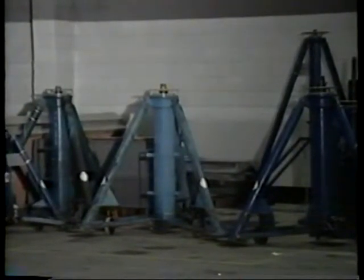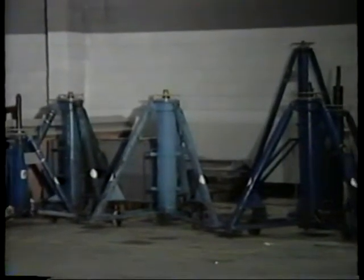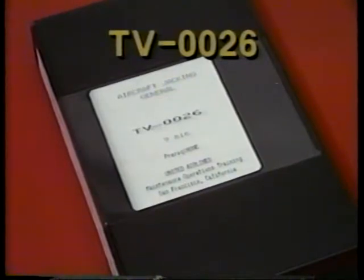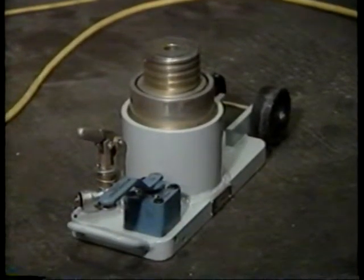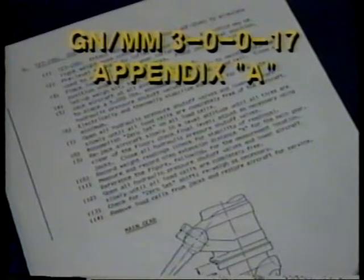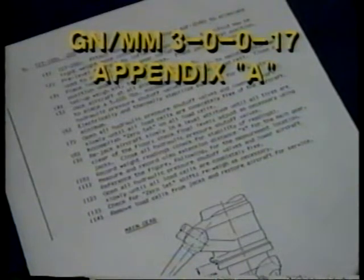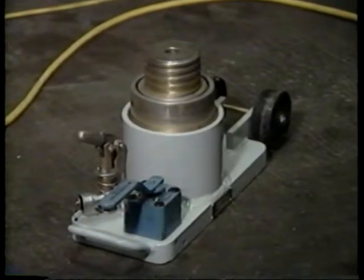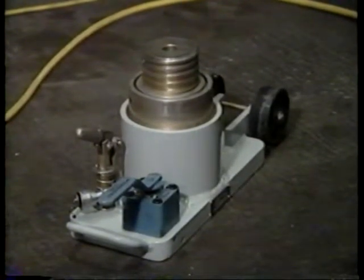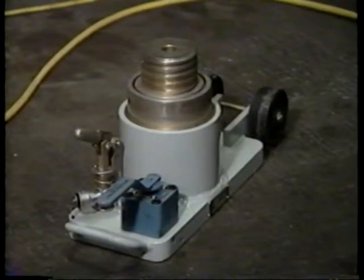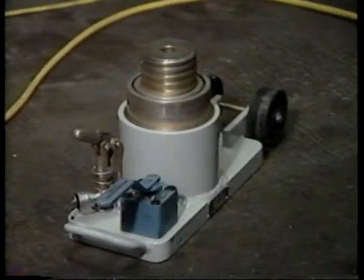The aircraft can be jacked by one of two methods. One method is to use tripod jacks with weighing cages. For a review of jacking with tripod jacks, check videotape TV0026. The other method is to use axle jacks. GNMM 3-0-0-17 Appendix A gives details and shock strut measurements to use with axle jacks. Low axle jacks, specifically designed for aircraft weighing, will normally fit under an axle when carrying a load cell. These jacks will be used in this program.